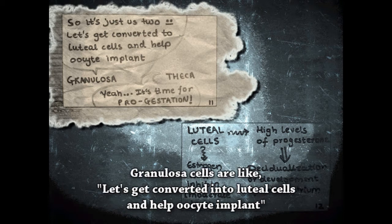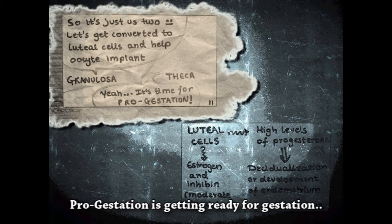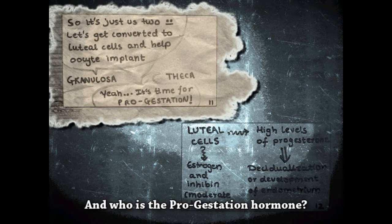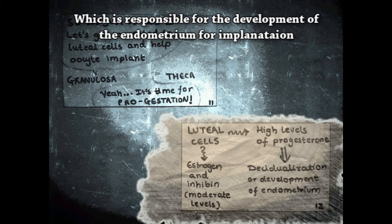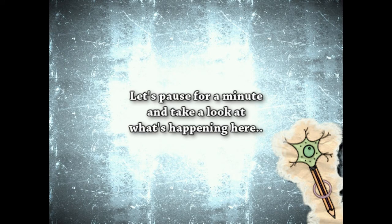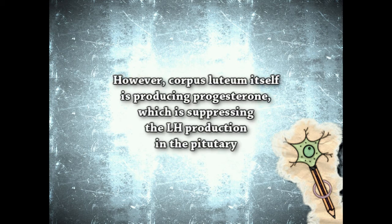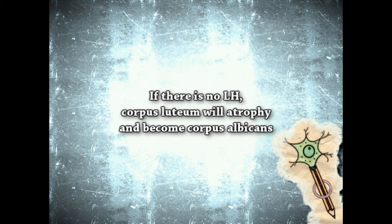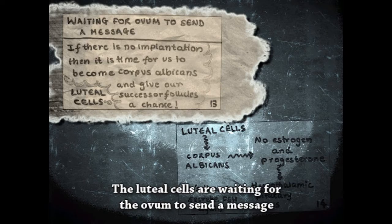The granulosa cells decide to get converted to luteal cells and help the oocyte implant, and the theca cells agree — it's time for progestation. Progestation is getting ready for gestation, and the progestation hormone is progesterone. The corpus luteum produces high levels of progesterone, which is responsible for the development of the endometrium for implantation. LH is required for the maintenance of the corpus luteum; however, the corpus luteum itself is producing progesterone, which suppresses LH production in the pituitary. If there is no LH, the corpus luteum will atrophy and become corpus albicans.